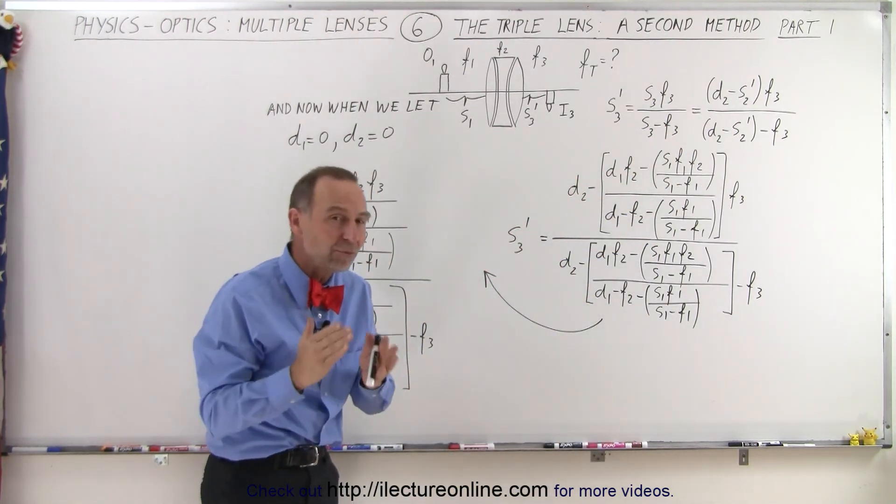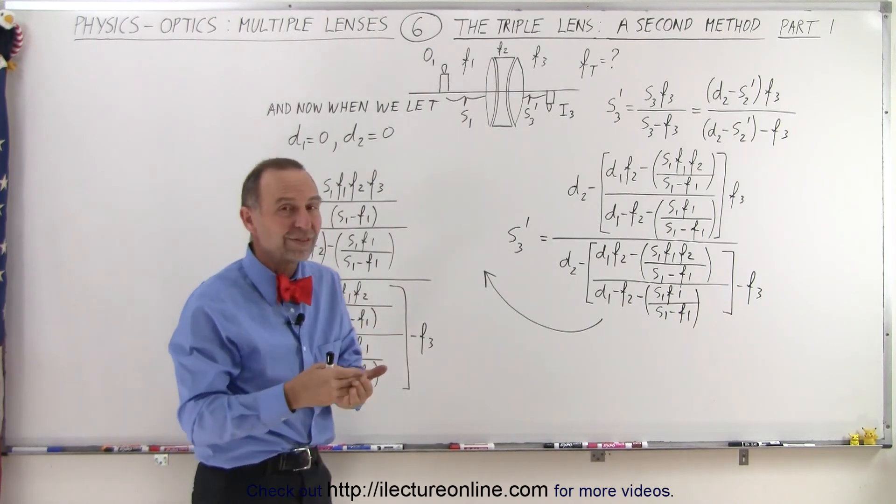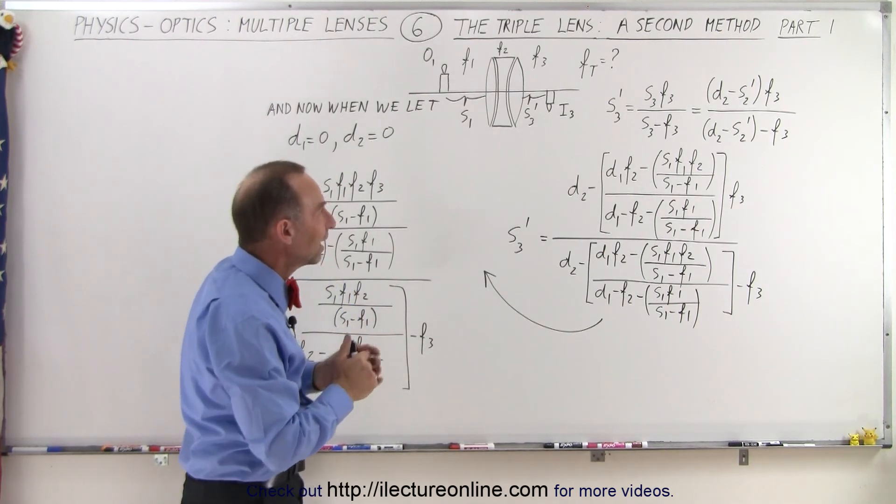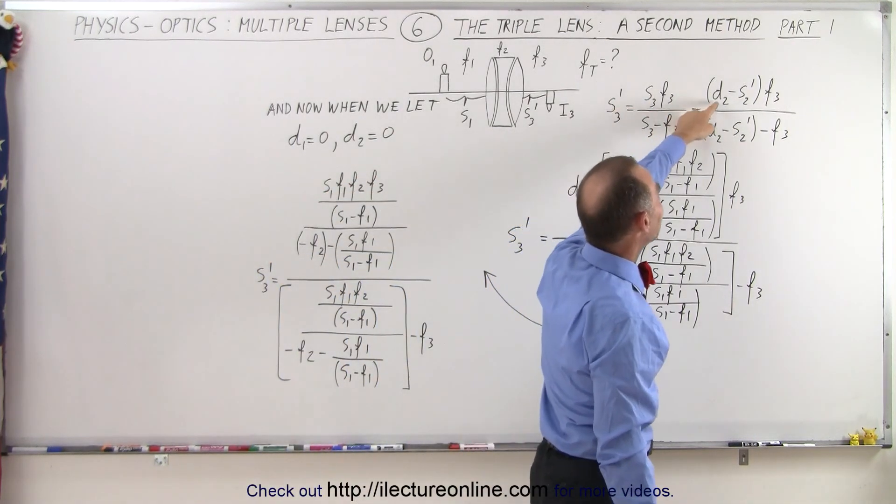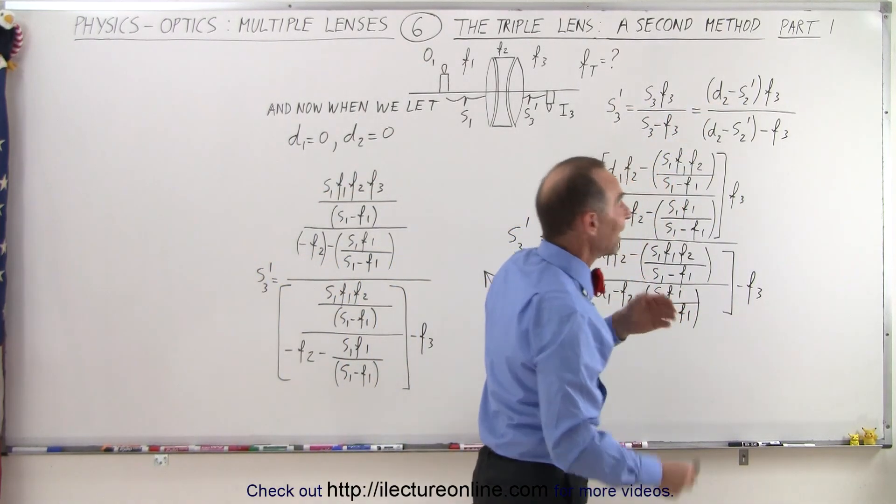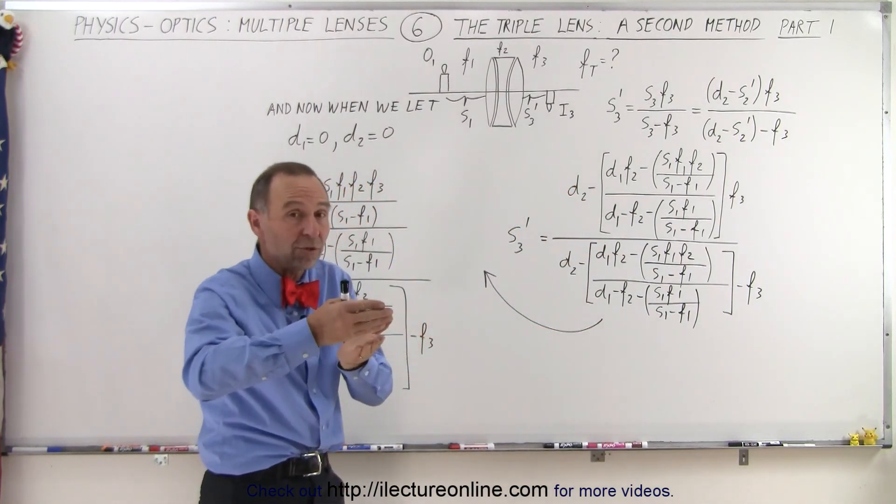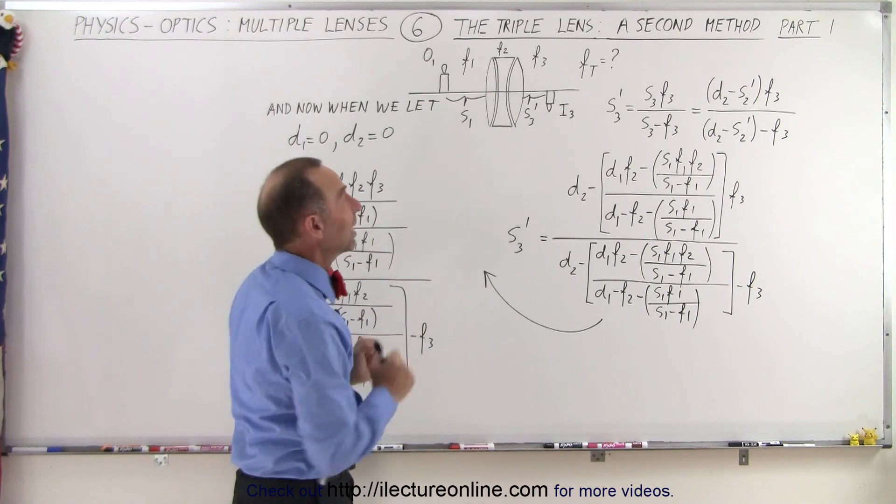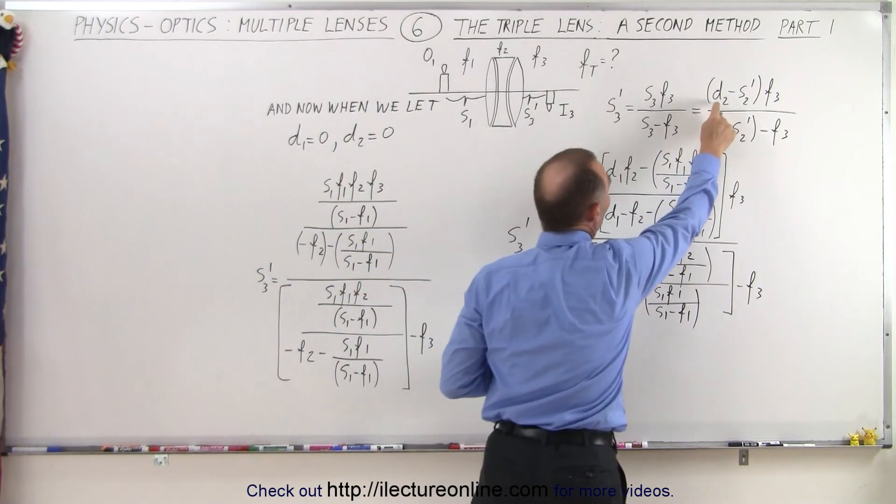S3 being the object distance of the third lens, the third object, which of course was the image of the second object, and therefore we can replace S3 by D2 minus S2 prime. S2 prime is the distance to the second image, which then of course becomes the object of the third image, but we have to take into account the distance between the second and the third lens, which we'll call D2.